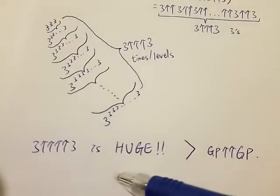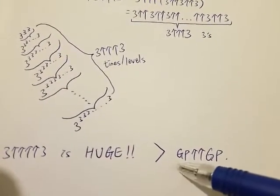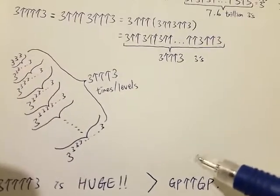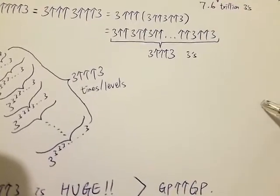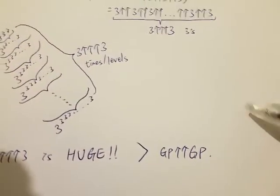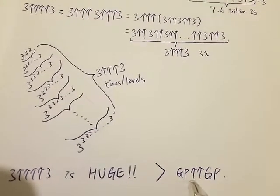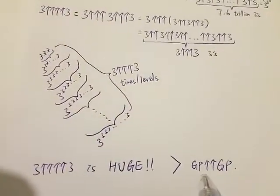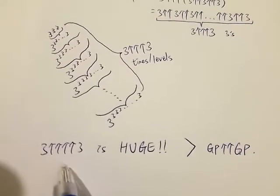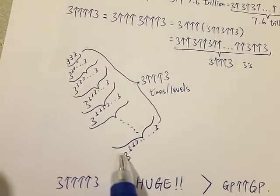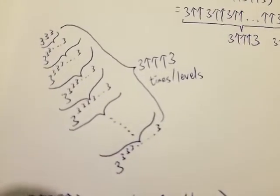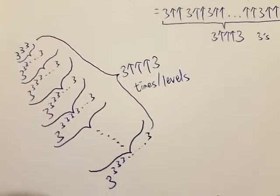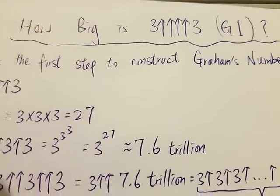So 3, 4 arrows, 3 is huge. In fact, it's way, way bigger than a Googleplex double arrow Googleplex, which means Googleplex to the power of Googleplex, to the power of Googleplex, and so on. This number is actually between 3, 4 arrows, 3 and 3 triple arrow 3, but much closer to 3 triple arrow 3. So this is G1 — it is itself a very, very big number. Hopefully this video makes it easier to understand how big 3, 4 arrows, 3 is. Thanks for watching, and have a nice day.